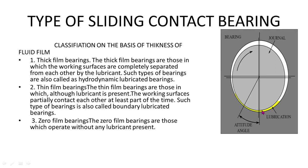The last type is the zero film bearing. Zero film bearings operate without lubricant, so there is almost zero thickness of the fluid film because no lubricant is used. These are the classifications of sliding contact bearings on the basis of the thickness of the lubricant film.